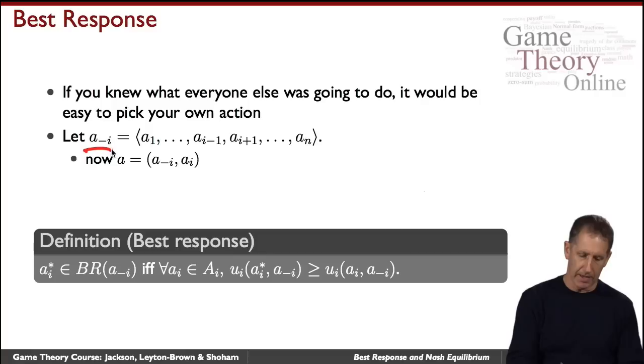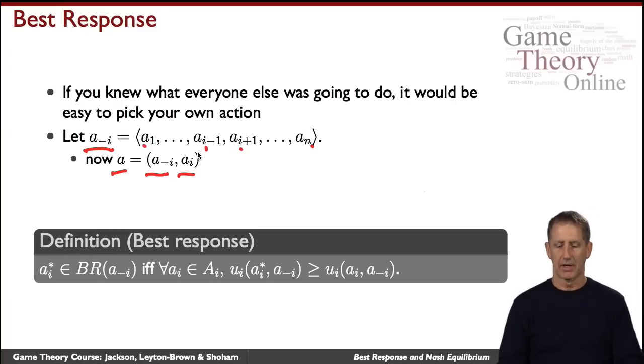Let's call A_{-i} the action sequence of everybody except you, player i. So it's player one and so on and then player i minus one, i plus one and all the rest. So the entire action vector, we call it the action profile, A is really made up of all those A_{-i} and your own action.